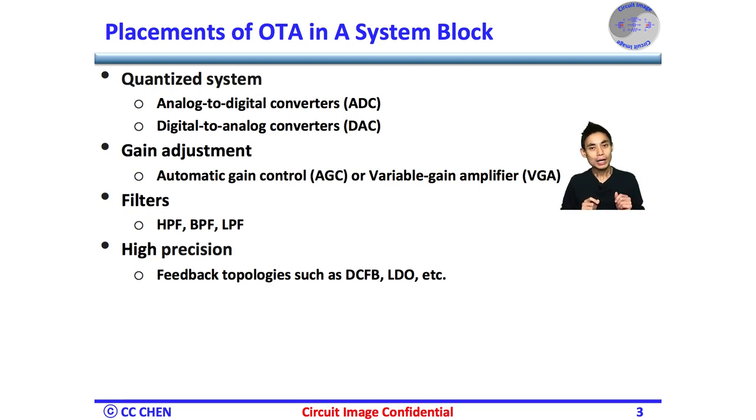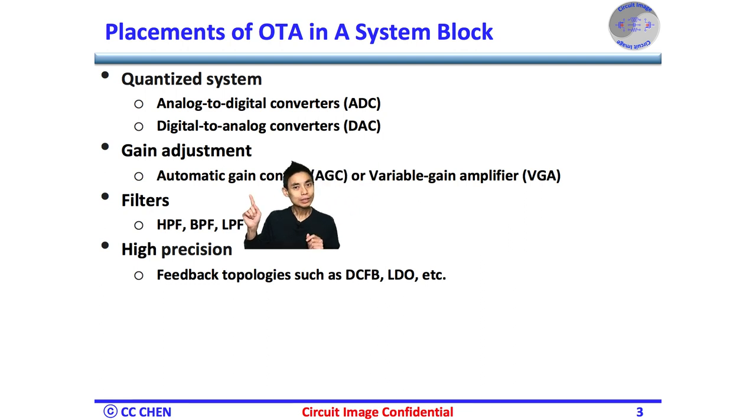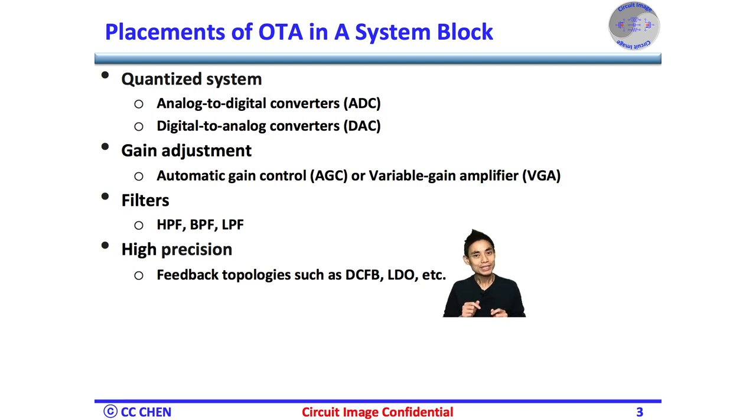In addition, the frequency response of the transconductance can be adjusted. By combining a few OTAs and capacitor elements, we can implement a few filter responses, such as high-pass, band-pass, and low-pass filters. The most popular placement of the OTA is in a negative feedback loop for precision control purposes, such as the DC feedback to reduce the DC offset voltage, and a low drop-out regulator LDO to reduce the supply noise.